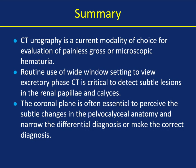In summary, CT urography is the study of choice for evaluation of painless gross or microscopic hematuria. Routine use of wide window settings is critical if you want to detect papillary or calyceal abnormalities — 550 over 50 is a classic window. Also, routine use of coronal MIP imaging is essential to perceive the subtle changes in pelvicalyceal anatomy, narrow the differential diagnosis, and allow you to make the correct diagnosis. Calyceal disease — particularly papillary necrosis, medullary sponge kidney, and subtle TCCs — are often misdiagnosed early, and by the time they're diagnosed there's substantial damage to the kidney or tumor has spread beyond the kidney.